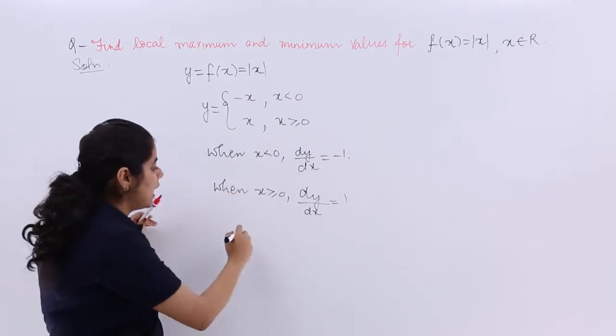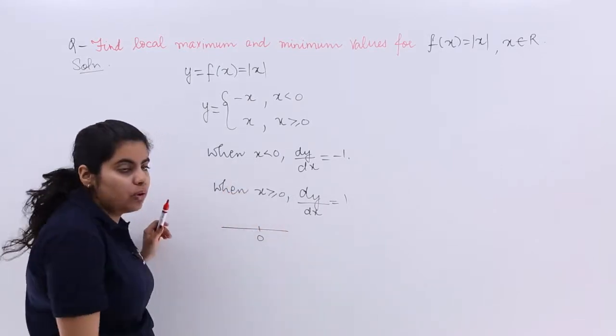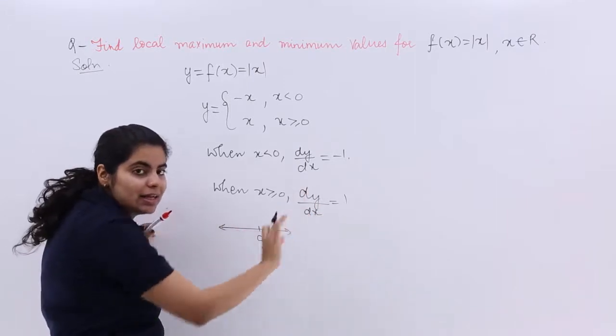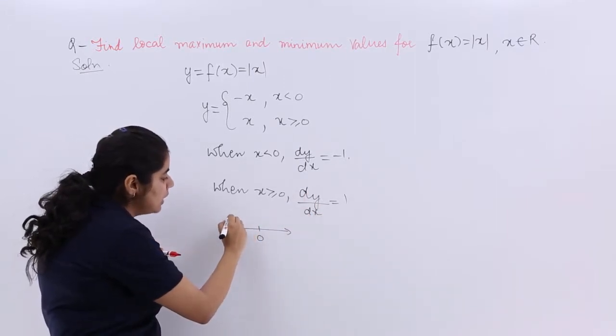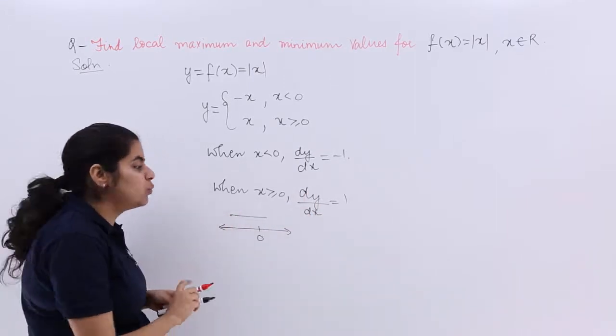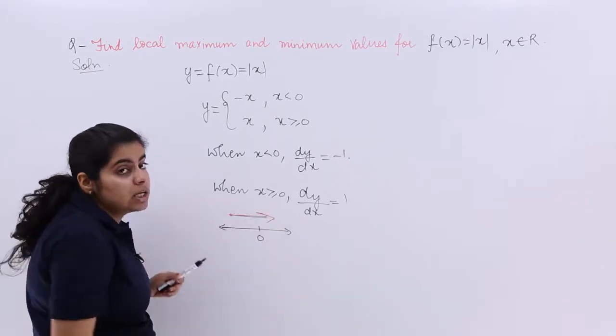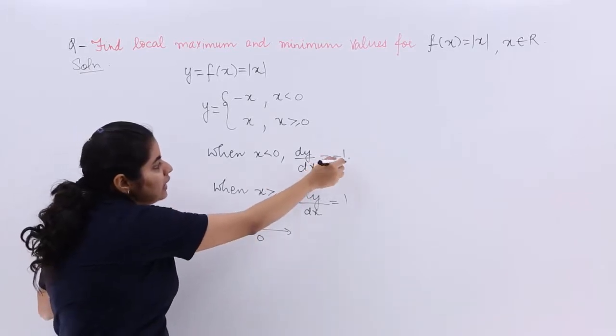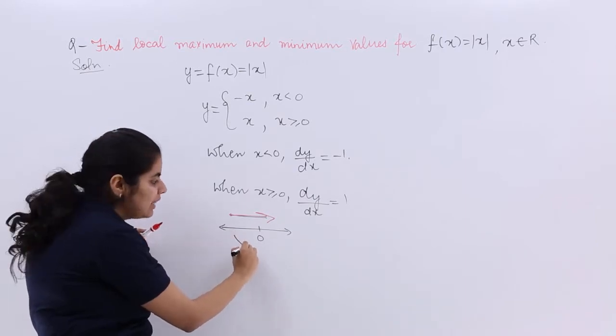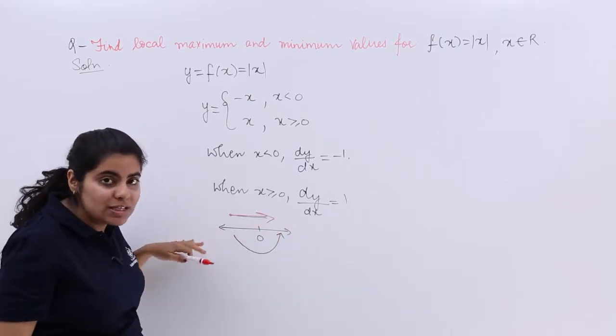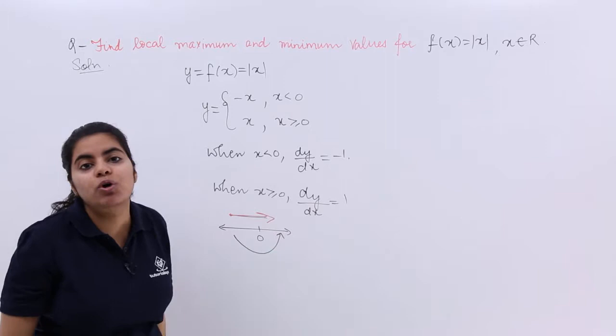Now you see that suppose this is 0 on a number line. When you move from less than 0 to greater than 0, you find that the differentiation was -1 and then it changed to +1. So it is going from negative to positive.